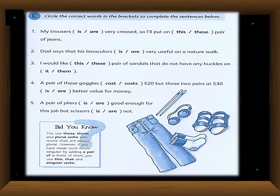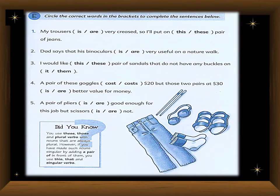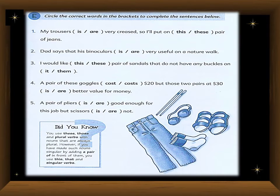Now we start Exercise E. In this exercise, circle the correct words in the brackets to complete the sentences. You will encounter nouns always used as plural, and to make them singular you use 'pair of.' With always-plural nouns, the helping verb is 'are,' but if 'pair' comes before them, you treat the subject as singular and choose accordingly.